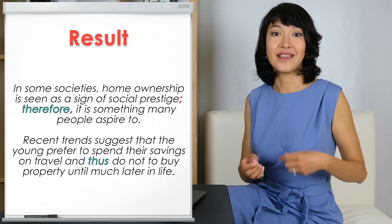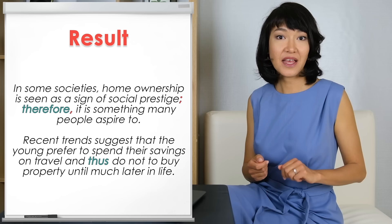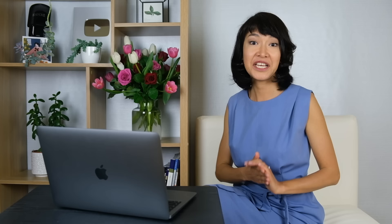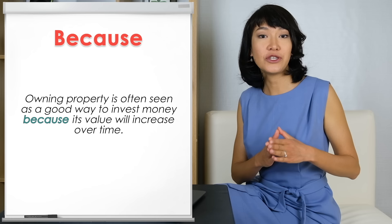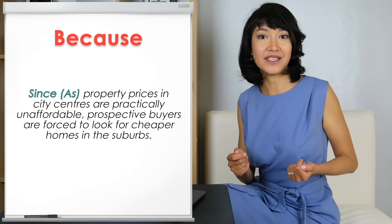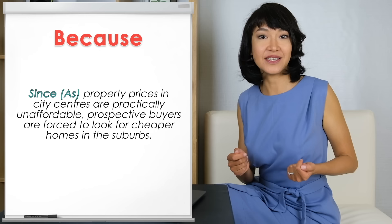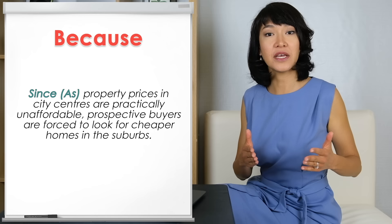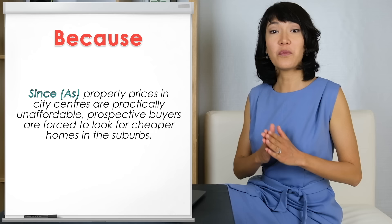We can end a sentence with THUS: 'Recent trends suggest that the young prefer to spend their savings on travel and thus do not buy a property until much later in life.' If we want to explain what the cause of something is, the most common linking word is BECAUSE, which we put in the middle of the sentence: 'Owning property is often seen as a good way to invest money because its value will increase over time.' To add variety to your writing, you can also use AS and SINCE. Both can come in the middle of the sentence, or we can start a sentence with them, putting the cause first and the result after: 'Since property prices in city centers are practically unaffordable, prospective buyers are forced to look for cheaper homes in the suburbs.'